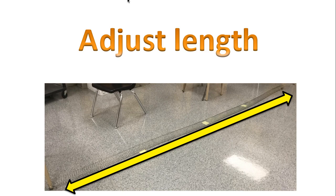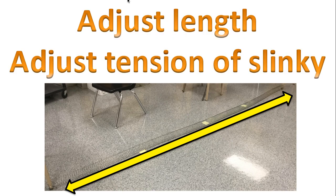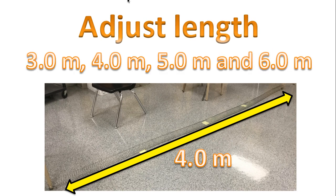To do this lab we will have to measure the length, and we'll be adjusting the length many times. When we adjust the length we are actually adjusting the tension of the slinky. This length is approximately four meters as illustrated in the diagram.